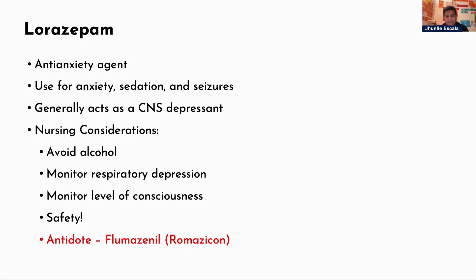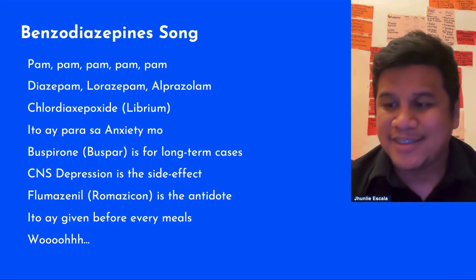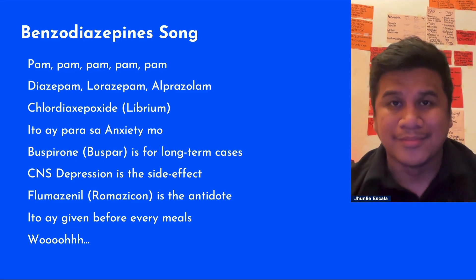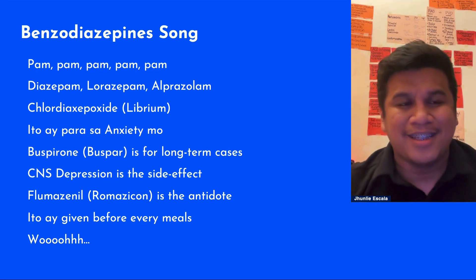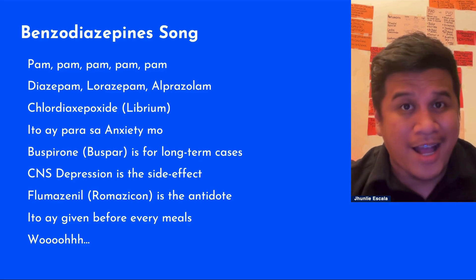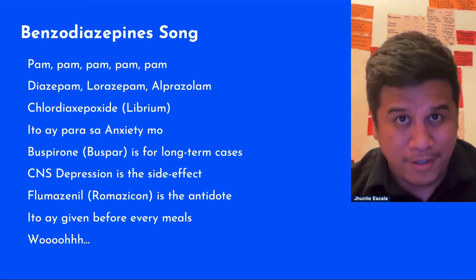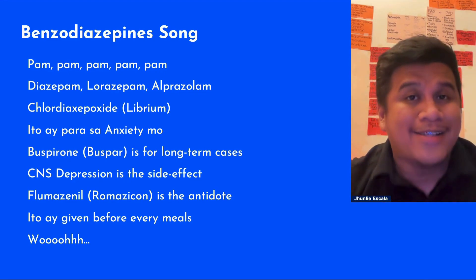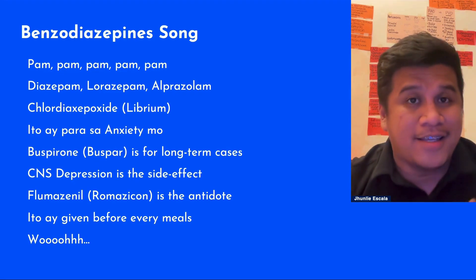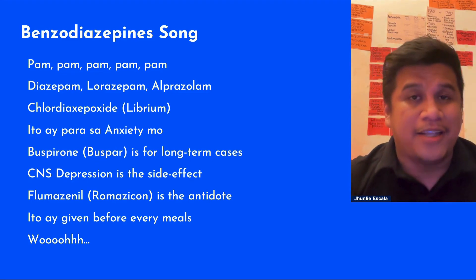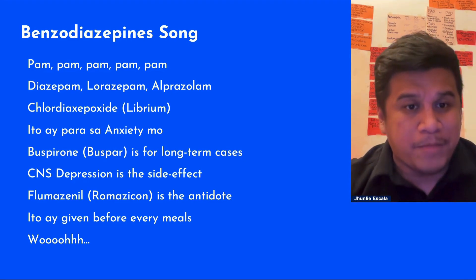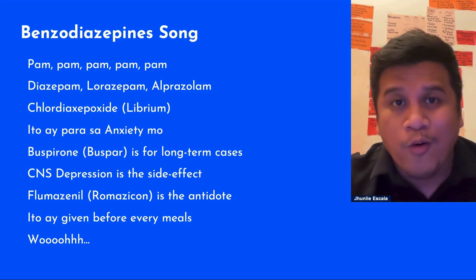Here is a mnemonic song to help remember the benzodiazepines: diazepam, lorazepam, alprazolam, chlordiazepoxide (Librium) — these are for anxiety. Buspirone is for long-term cases. CNS depression is the side effect. Flumazenil (Romazicon) is the antidote, given before every meal.